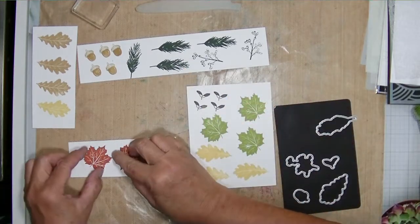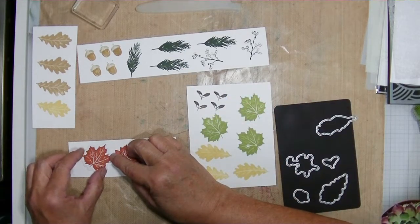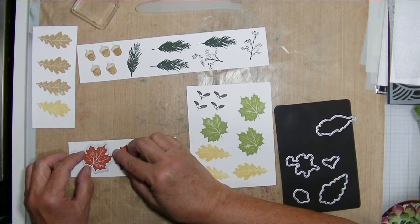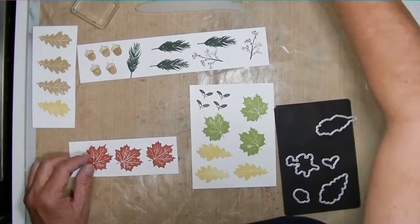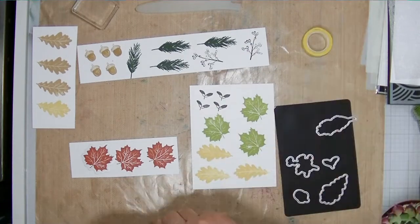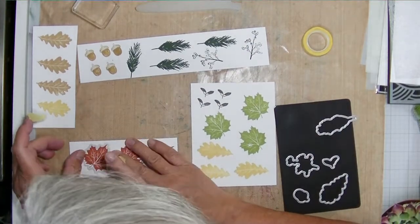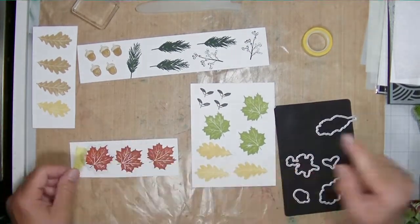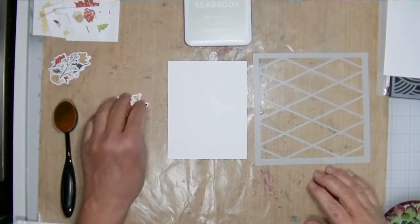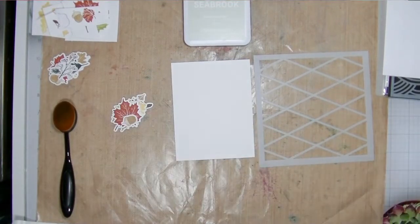So I'm going to go ahead and die cut everything. And when I do my die cutting, I try to really make sure the die is evenly spaced around the outside of the image that I stamped. And I always tape them down before I run them through my machine so they don't slide.